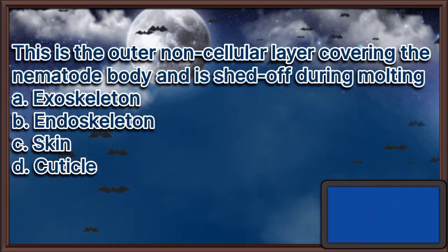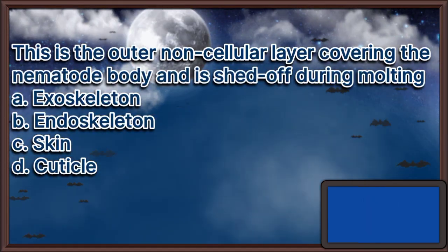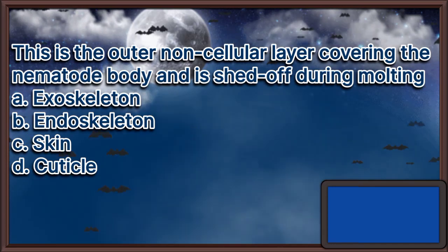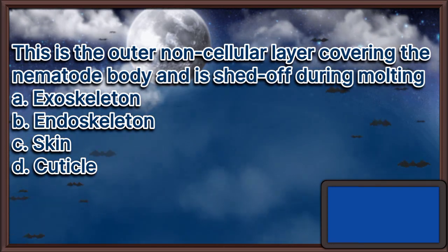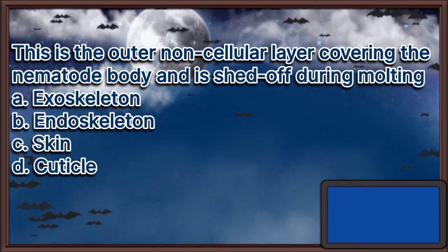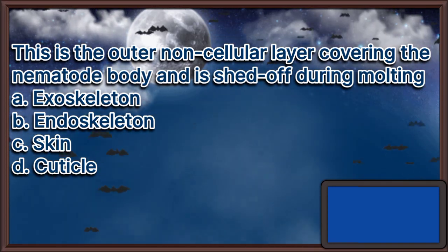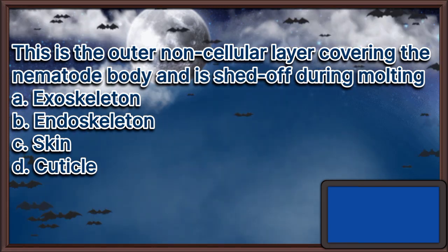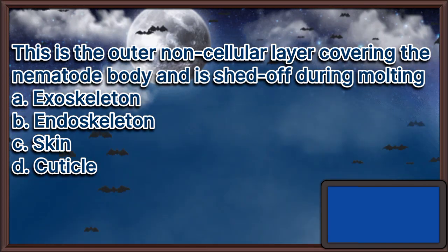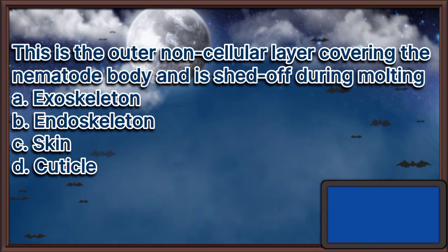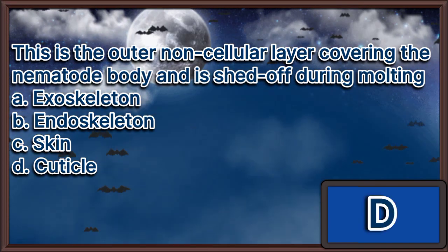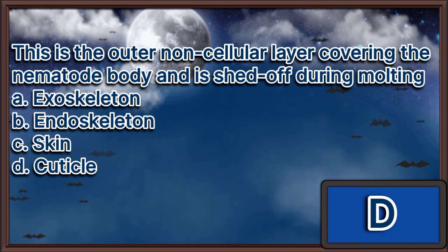This is the outer non-cellular layer covering the nematode body and is shed off during molting. A. Exoskeleton. B. Endoskeleton. C. Skin. D. Cuticle. The answer is letter D.